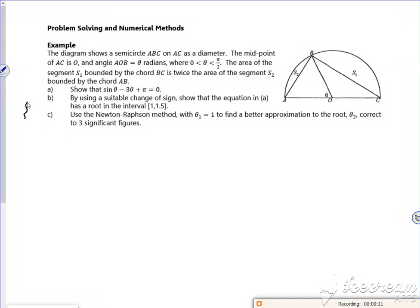So it says the diagram shows a semicircle ABC, AC is the diameter, midpoint of AC is the origin, so I've got an angle theta, where theta is between 0 and pi by 2, so that's telling me I'm in radians, so then that angle must be pi take away theta.